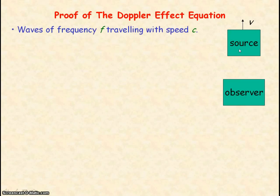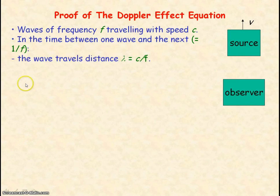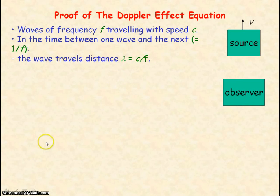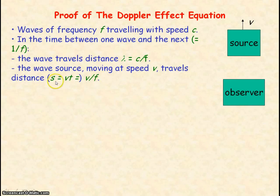We have a source of waves emitting waves of frequency F, and the waves are travelling with a speed C. The time between one wave and the next is the period, which equals 1 divided by the frequency. In this time, the waves travel a distance of one wavelength, equal to the wave speed divided by the frequency. The source of waves moving at speed V will travel a distance equal to speed times the time period, which is 1 over the frequency — so the distance equals the source speed divided by the frequency.